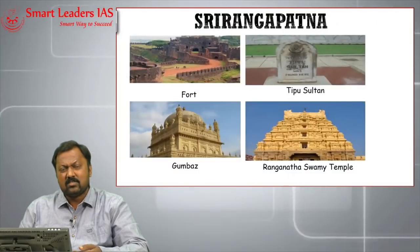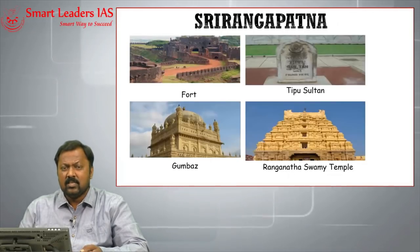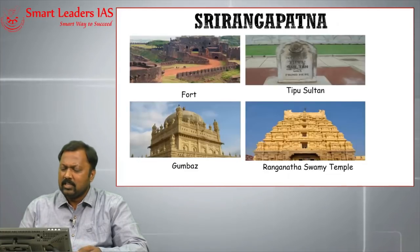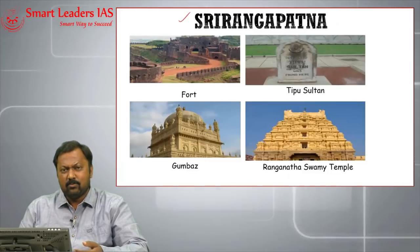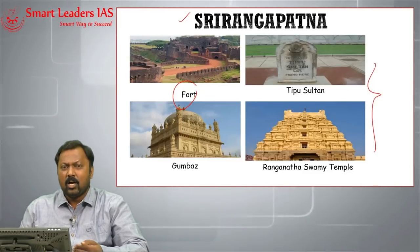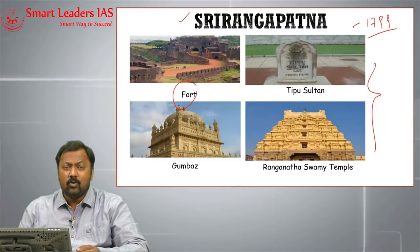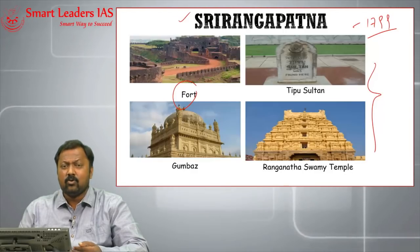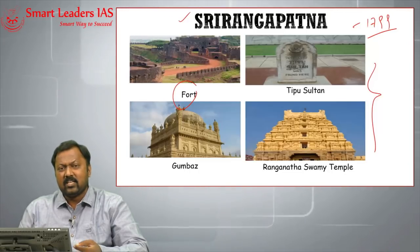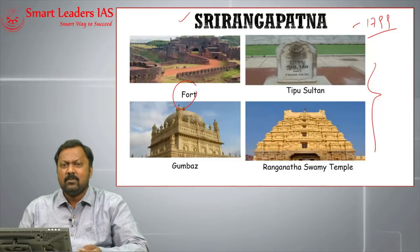Srirangapatinam is the first major and important city located on the banks of the Cauvery. It is a historical city and was the capital of Hyder Ali and Tipu Sultan. In Srirangapatinam today, the fort exists. In the year 1799, the Fourth Anglo-Mysore War was fought here, in which the British defeated Mysore, killed Tipu Sultan, and annexed the whole of Mysore, creating a small princely state.